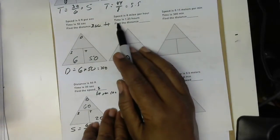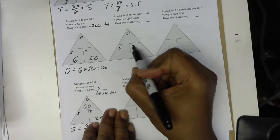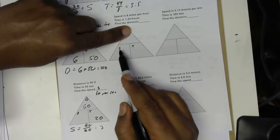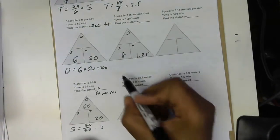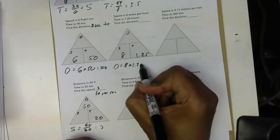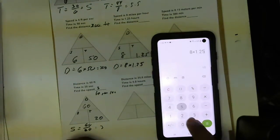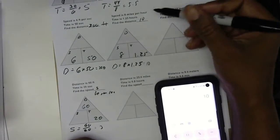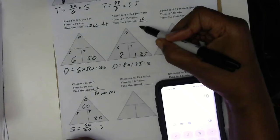Next: speed is 8, time is 1.25 hours — find the distance. D goes here, S goes here, T goes here. We cover up distance and put in S and T. Speed is 8, so 8 goes here. Time is 1.25. Since 8 and 1.25 are right next to each other, that's multiplication — 8 times 1.25 gives us 10. Speed is miles per hour, so the distance is 10 miles.